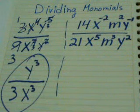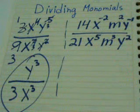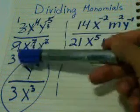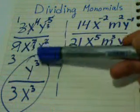Okay, here I have two examples of dividing monomials. The first example is 3x^4y^5 divided by 9x^7y^2.